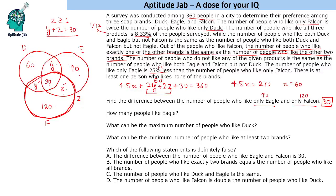How many people like Eagle? Y plus Z is present but we know Y plus Z equals 30, so we have 30 plus 90 plus 30, which gives 150 people.